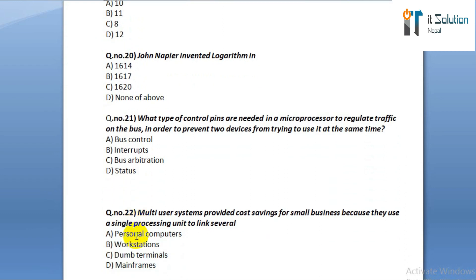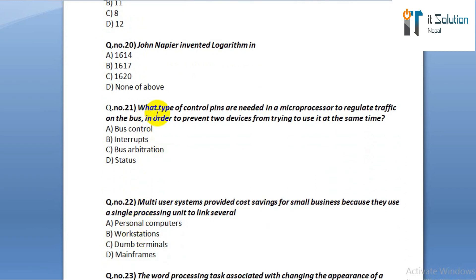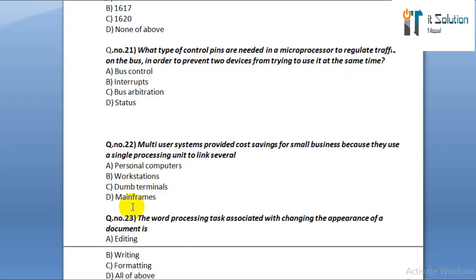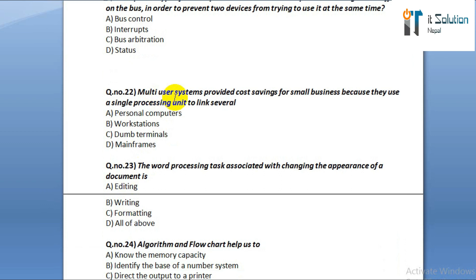Question number twenty-one: what type of control pins are needed in a microprocessor to regulate traffic on the bus in order to prevent two devices from trying to use it at the same time? Option A: bus control. Option B: interrupt. Option C: bus arbitration. Option D: status.